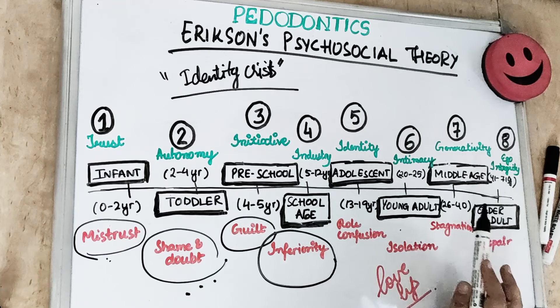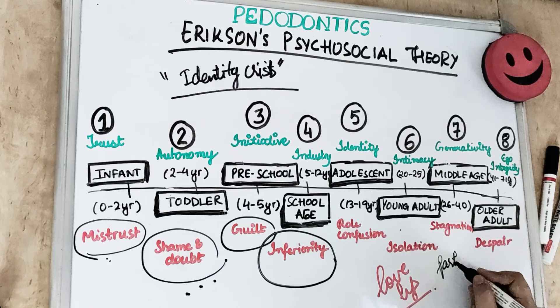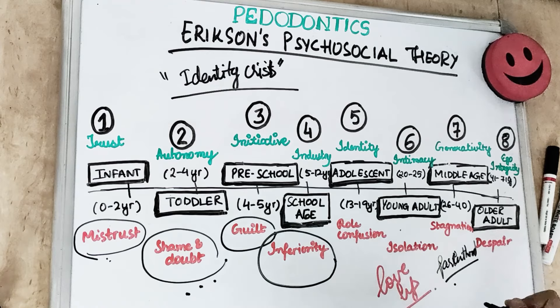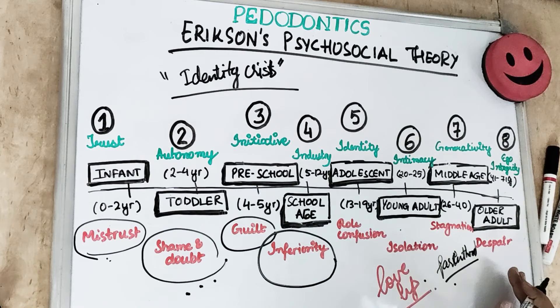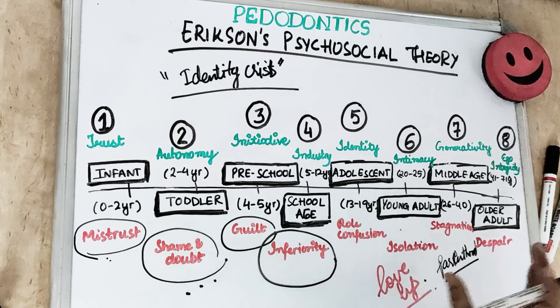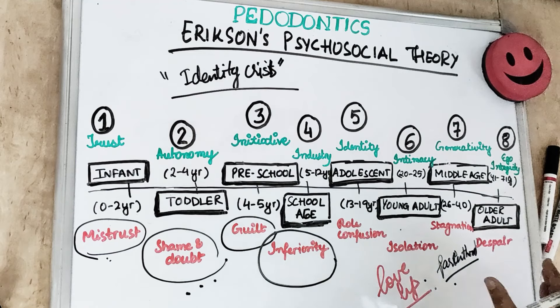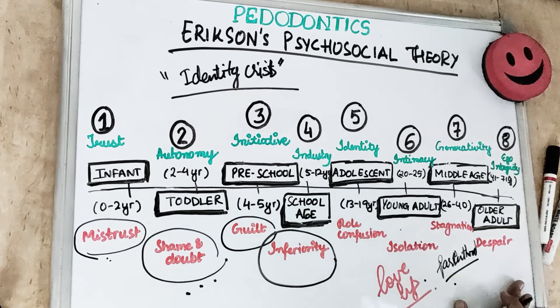The seventh stage is generativity versus stagnation, which is all about parenthood — taking care of the next generation. The eighth and final stage is ego integrity versus despair, seen in older adults. If all seven psychosocial crises have been resolved, the older adult develops integrity — they are independent, happy, self-confident, and have found a well-defined role in life.